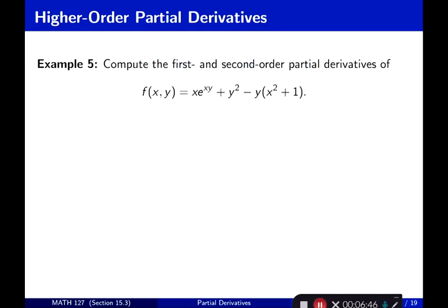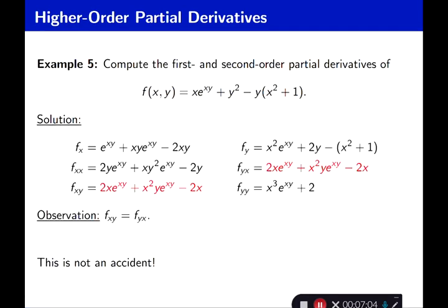Example 5: Compute the first and second order partial derivatives of f(x,y) = x·e^(xy) + y² − y(x² + 1). For f_x, the partial with respect to x, we apply the product rule: derivative of x is 1 times e^(xy), plus x times the derivative of e^(xy), which is e^(xy) times y — giving xy·e^(xy). So f_x = e^(xy) + xy·e^(xy) − 2xy.